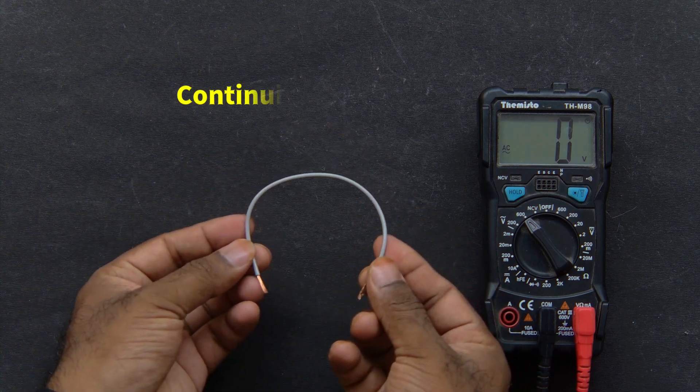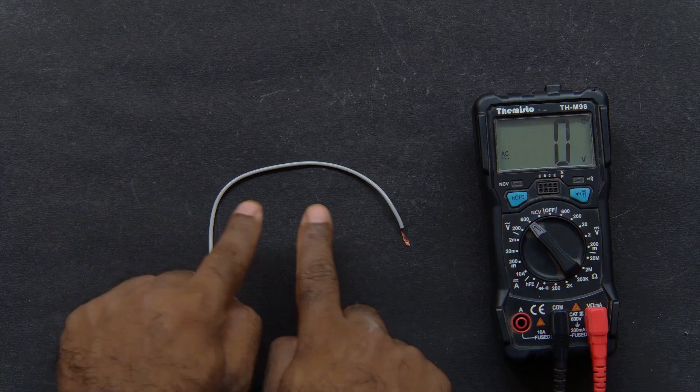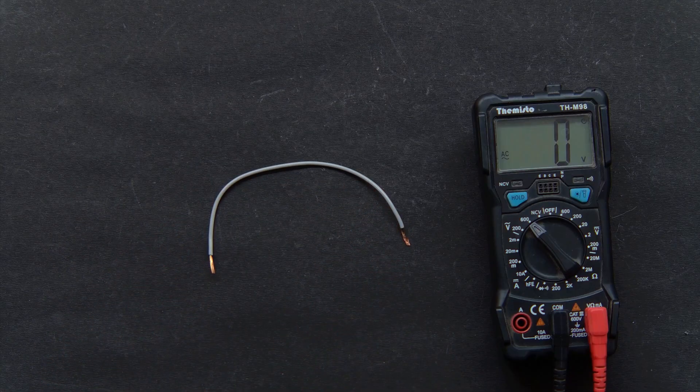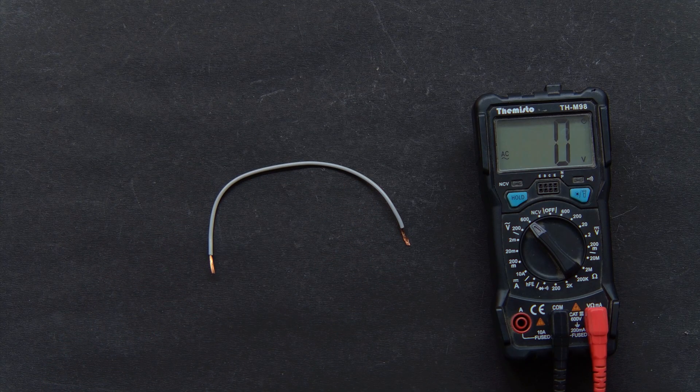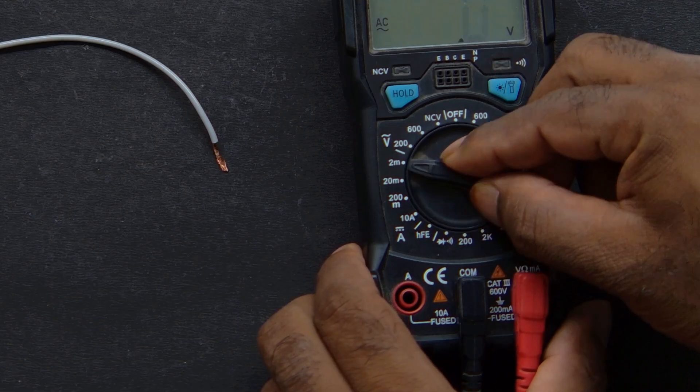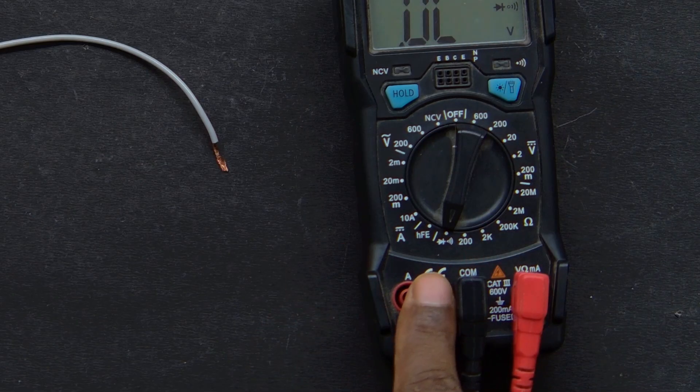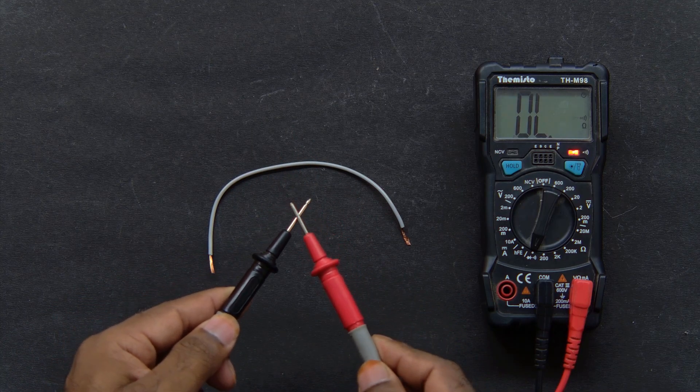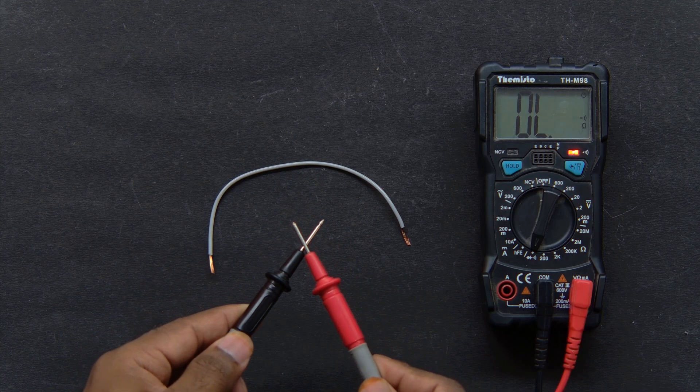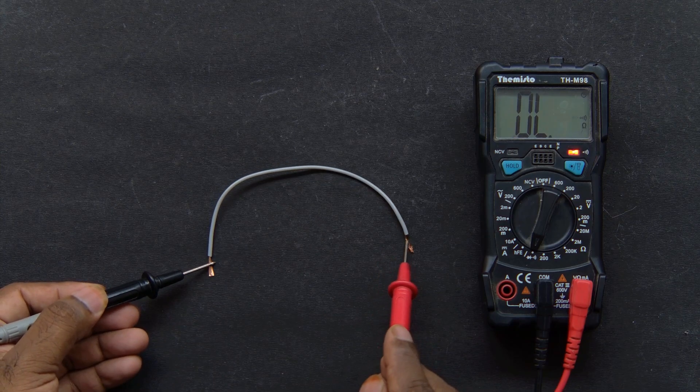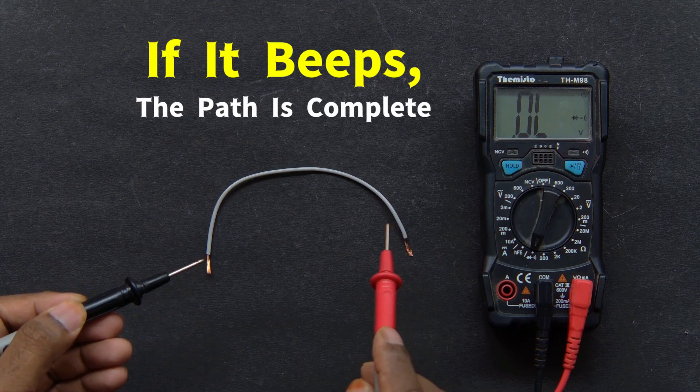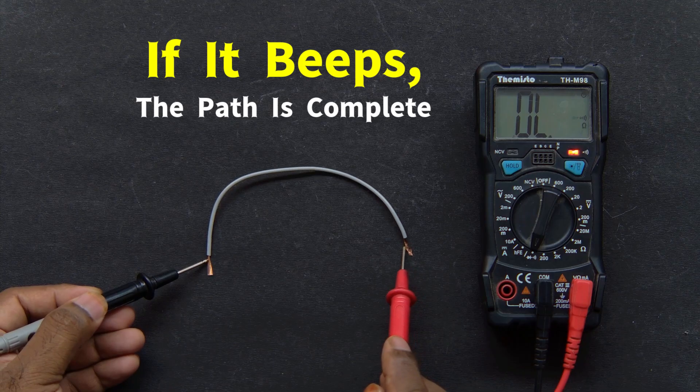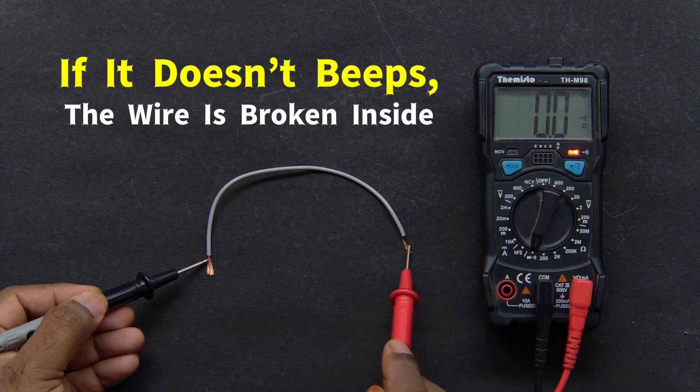Now, the continuity test. Sometimes a wire looks fine but doesn't work. That's where the continuity test helps. Turn the dial to the diode or sound wave symbol. Now touch the two probes together—you should hear a beep. That means the circuit is complete. Now test a wire or a fuse by touching both ends. If it beeps, the path is complete. If it doesn't beep, the wire is broken inside.